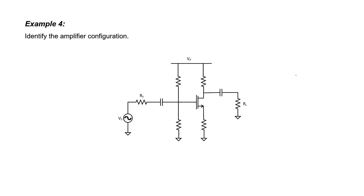Let's look at a few examples with field effect transistors. If you look for the arrow in the transistor, you can immediately identify the source — I'll label that with an S. We then also have the drain and the gate. Tracing our signal through the circuit: a source with a particular source impedance passes through a capacitor and into our gate. The signal then exits from the drain. Therefore, this is a common source configuration.